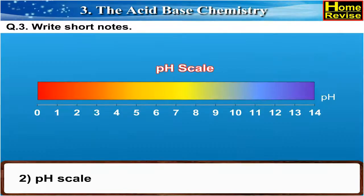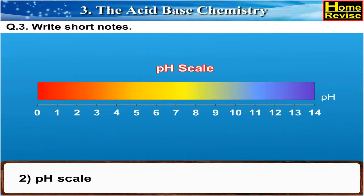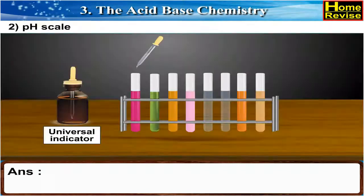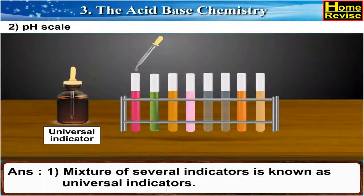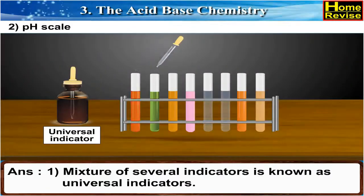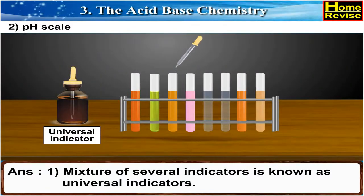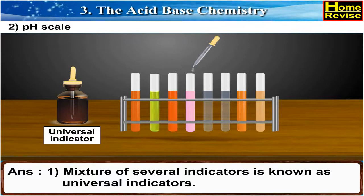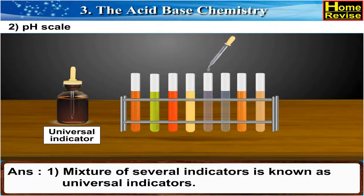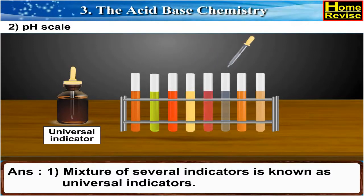Second, pH scale with proper diagram. A mixture of several indicators is known as universal indicators.